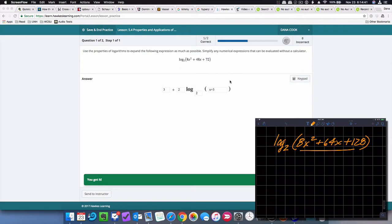Logarithm base 2 of 8x squared plus 64x plus 128. And the directions read, use the properties of logarithms to expand the following expression as much as possible. Simplify any numerical expressions that can be evaluated without a calculator. So first, the second sentence is basically saying write 8 fourths as the number 2 and write 3 squared as 9, etc.